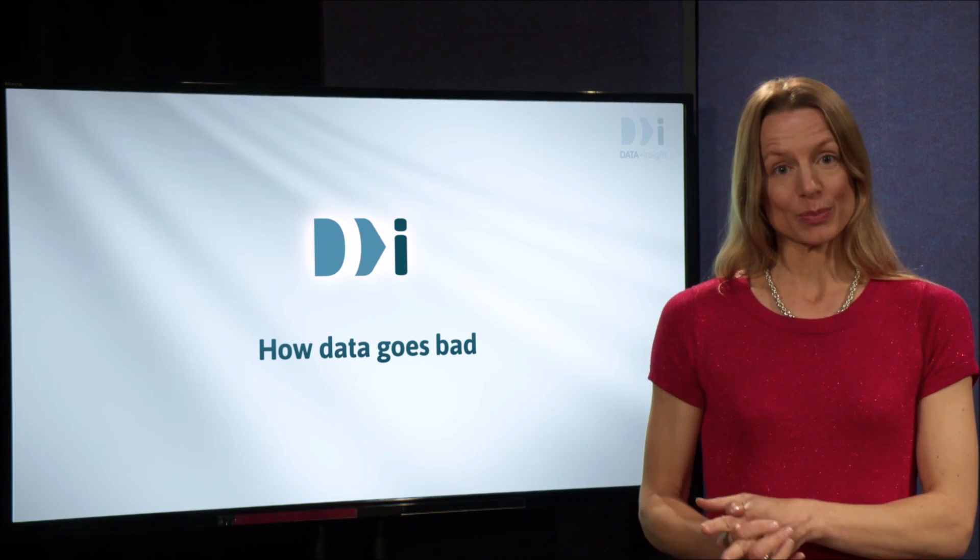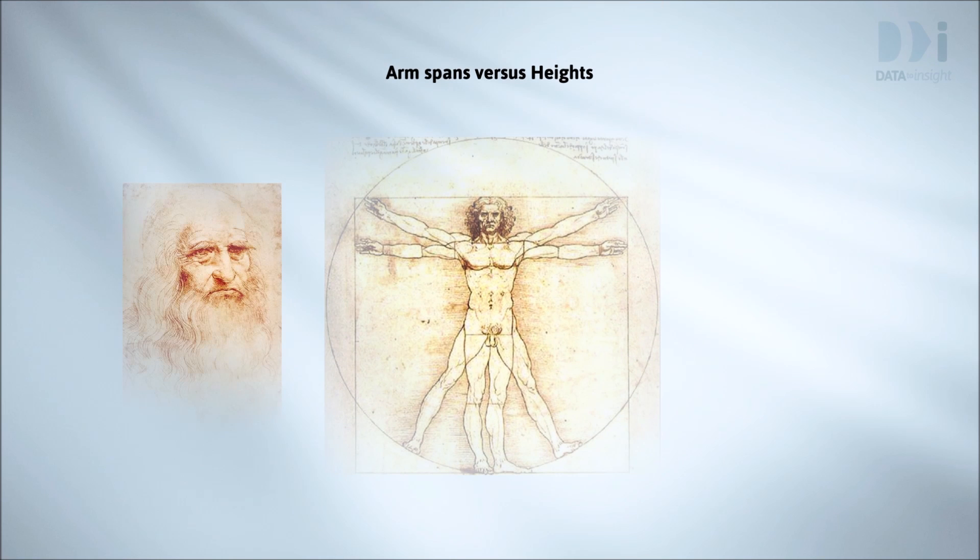Here's a simple example. It concerns arm spans versus heights. You may recognize this famous drawing by Leonardo da Vinci. If we were to graph arm span against height, what would we expect the graph to look like?